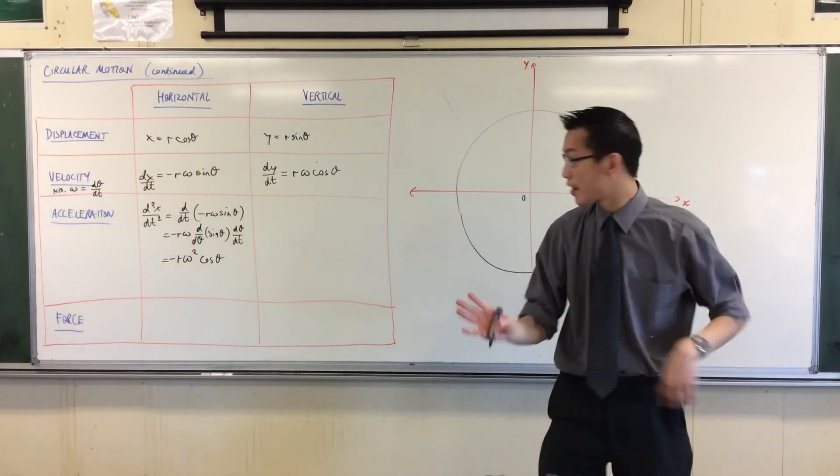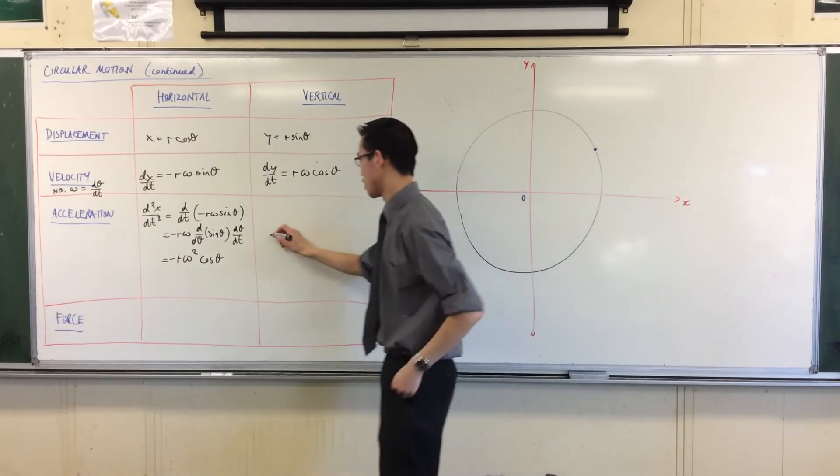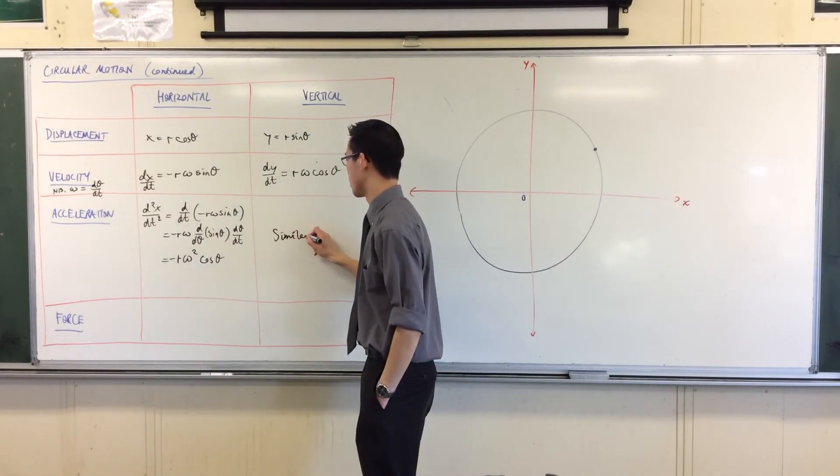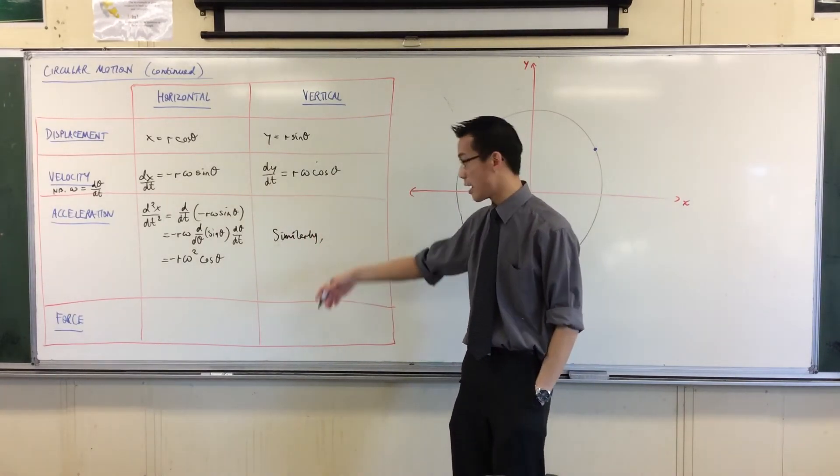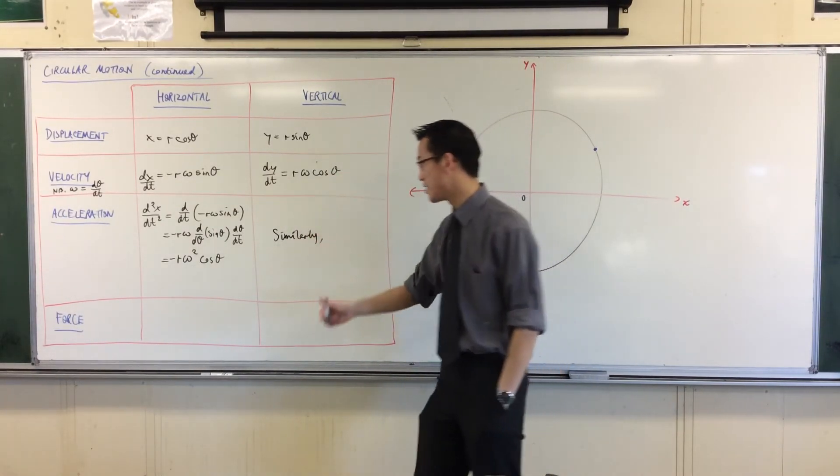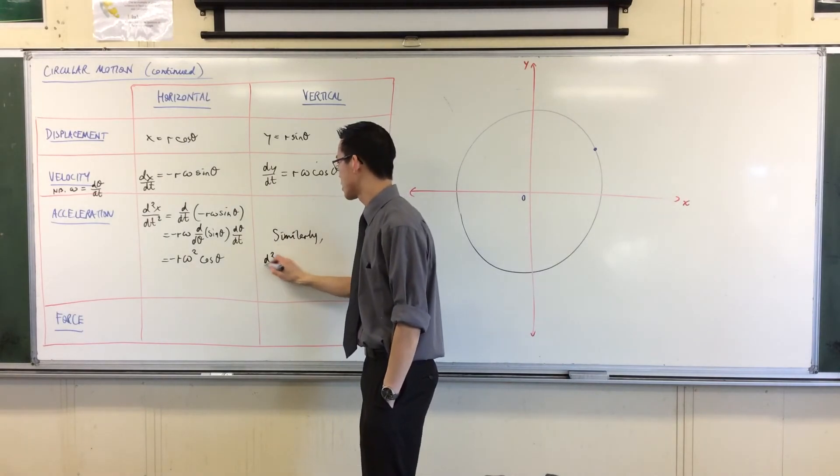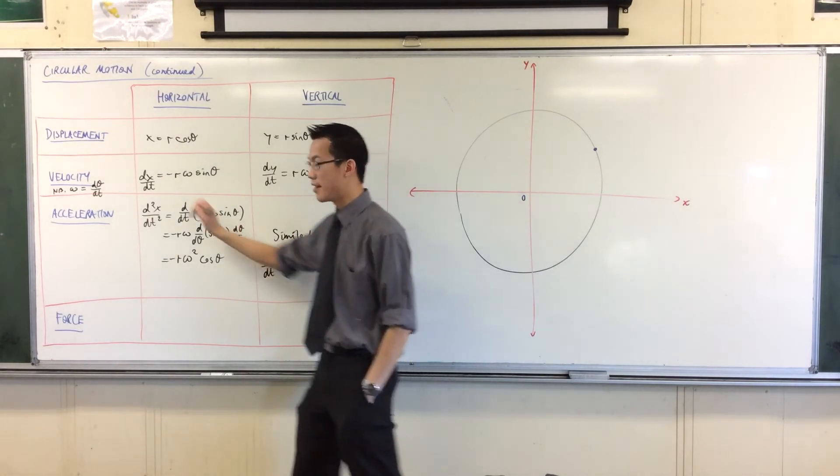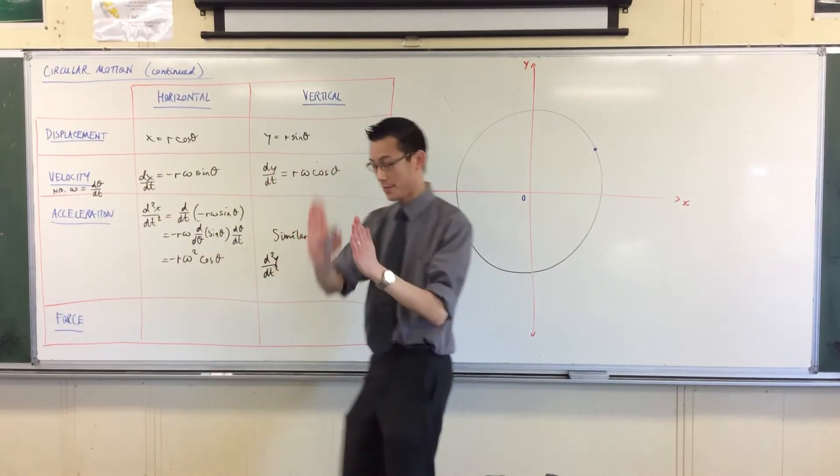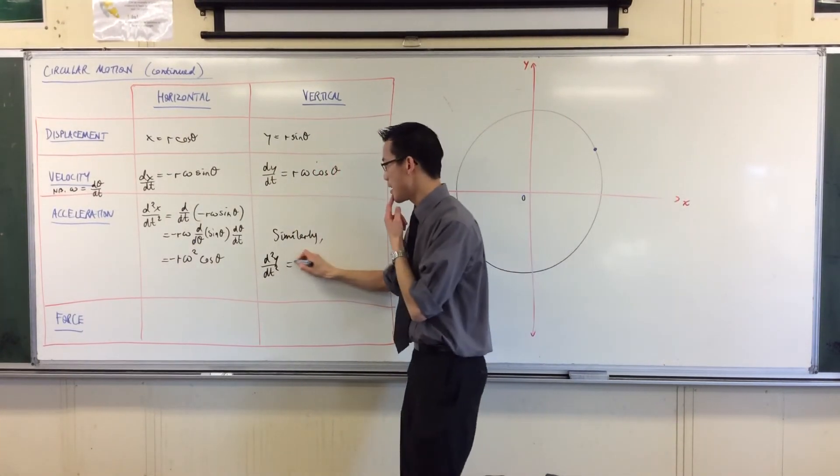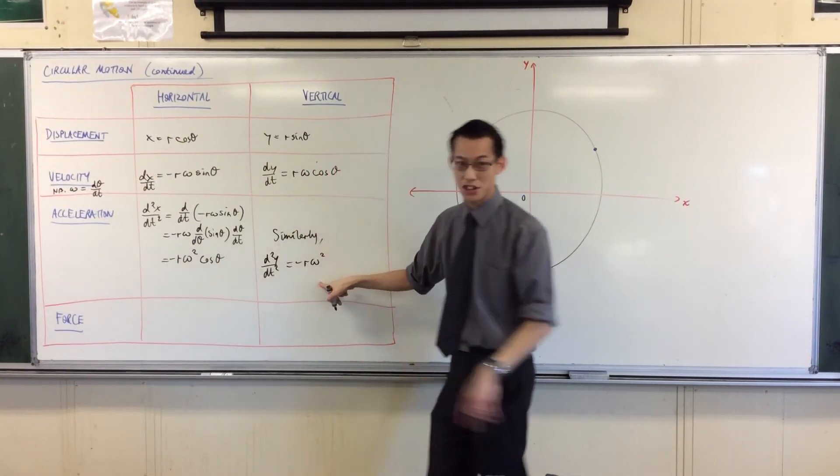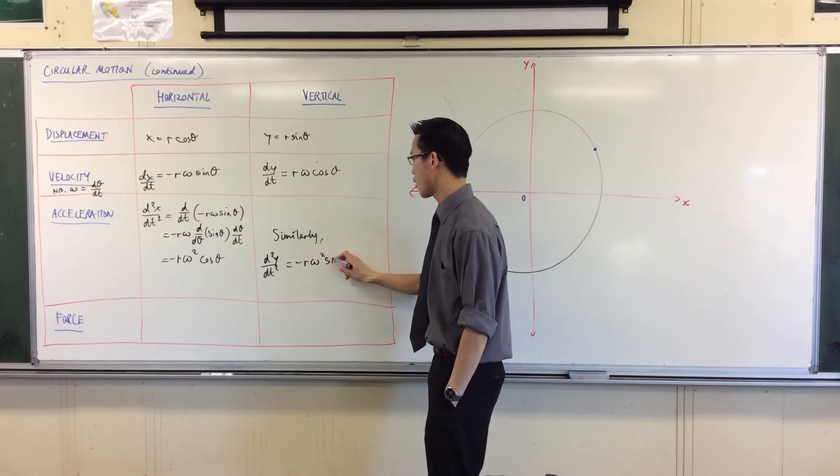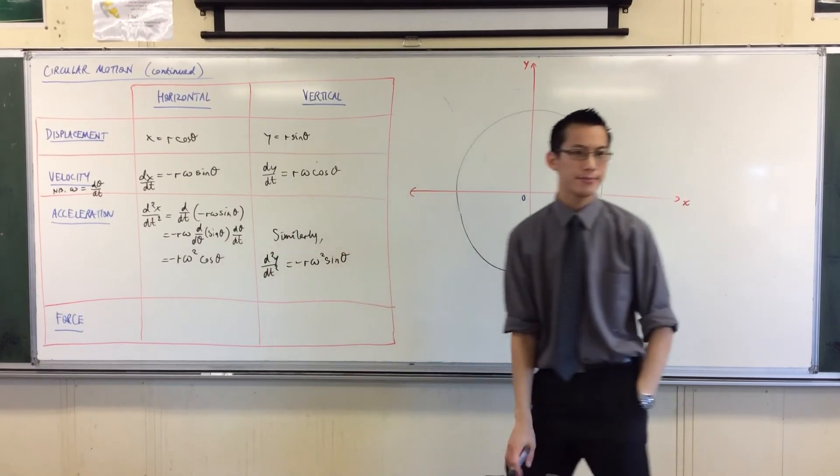That's just omega, that omega is going to come out here, it'll become minus R omega squared, and then the derivative of the sine is just cos. That's good, okay? Now, you can do exactly the same thing over here. Similarly, it's going to be exactly the same except with cos instead of sines. You're going to get d squared y on dt squared, the vertical acceleration. It's going to be minus R omega squared, you do the same thing, and that cos is going to turn into a sine.